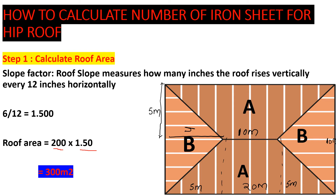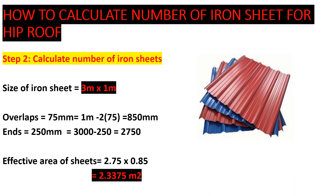We now proceed to find the number of iron sheets. The size of iron sheets we are using is 3 meters long by 1 meter wide. There are different sizes available — use whatever you have. We also account for overlaps: the side overlap is 75 mm, and the end overhang (what protrudes outside) is 250 mm. So for the ends, we subtract 250 mm, and for the overlap, we subtract 150 mm from the width.